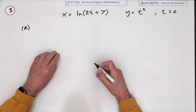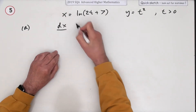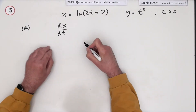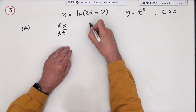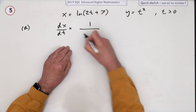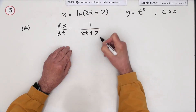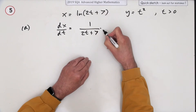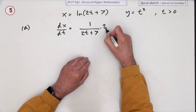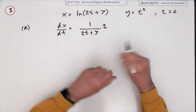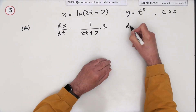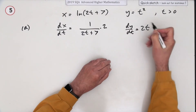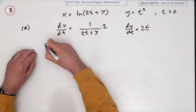From the parametric form, you can find dx/dt immediately: it's 1 over (2t + 7), multiplied by the inner derivative which is 2 — I'll leave that sitting there. And dy/dt is simply 2t.